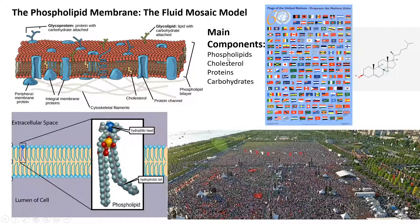Cholesterol helps to keep the membrane structurally stable with increasing temperature. As you can see, it's also a lipid and contains four rings as seen right here — this is the structure of cholesterol. It's non-polar and it orients itself inside the membrane.